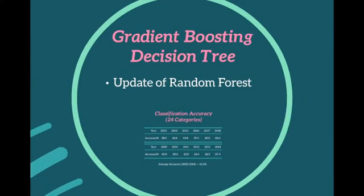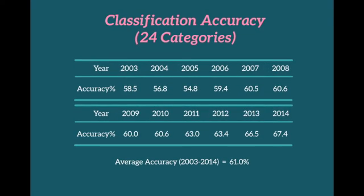We upgraded our decision tree to a gradient boosting decision tree. Here are the results of our final machine learning model accuracy. In 2003 and 2004, classification accuracy is at its lowest at around 50%, while in 2014 it reaches the highest at approximately 67.4%. The overall average is above 16 — which is a decent result.